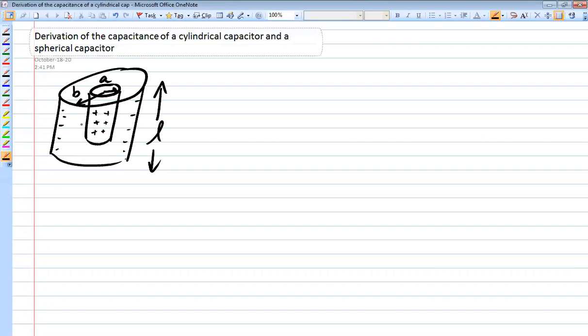There is an electric field in this gap due to this inner charge cylinder and it would point from the inner to the outer. Now we'll assume also that the length is much greater than the radii A and B, and so we can use Gauss's law to find the electric field in the gap.